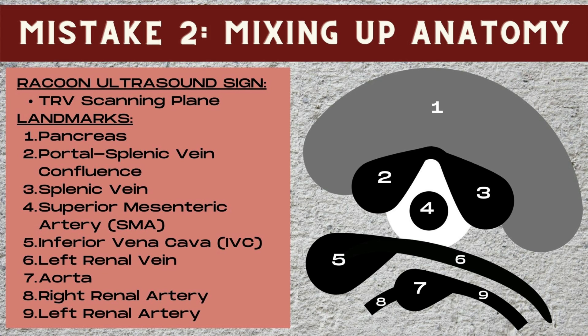Below the superior mesenteric artery is going to be number seven — this is our aorta in a transverse plane — and off of that aorta are numbers eight and nine, the right and the left renal arteries. Below the head of the pancreas, and often slightly lateral to the head of the pancreas, is going to be the IVC — number five on our diagram — and coming off of that IVC you're going to see the renal veins. Number six represents the left renal vein.